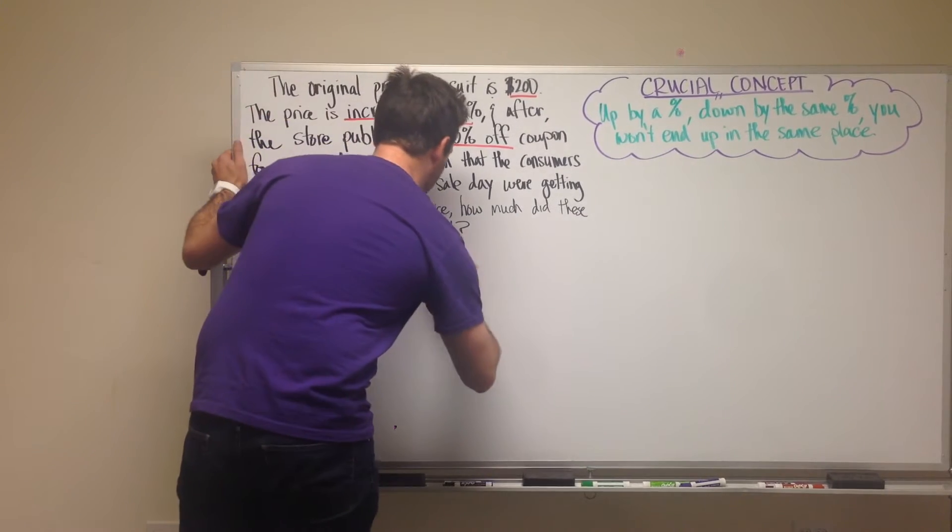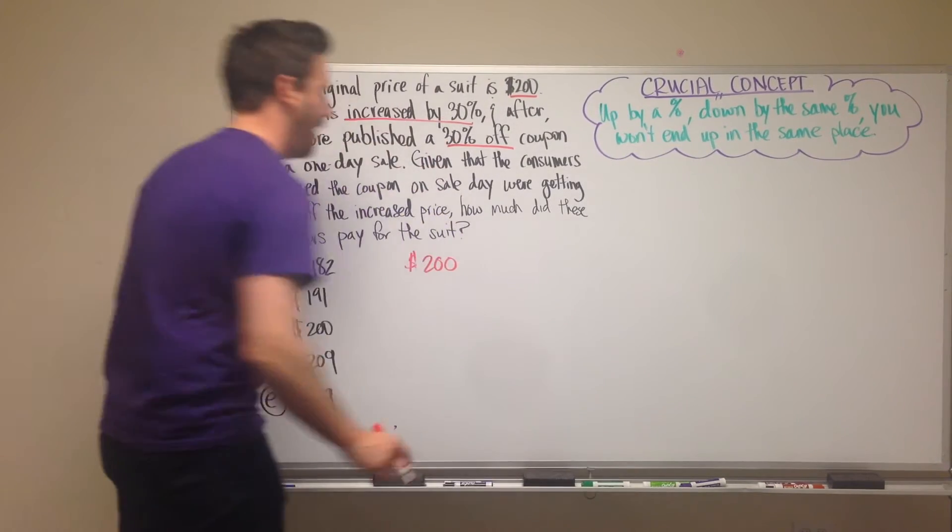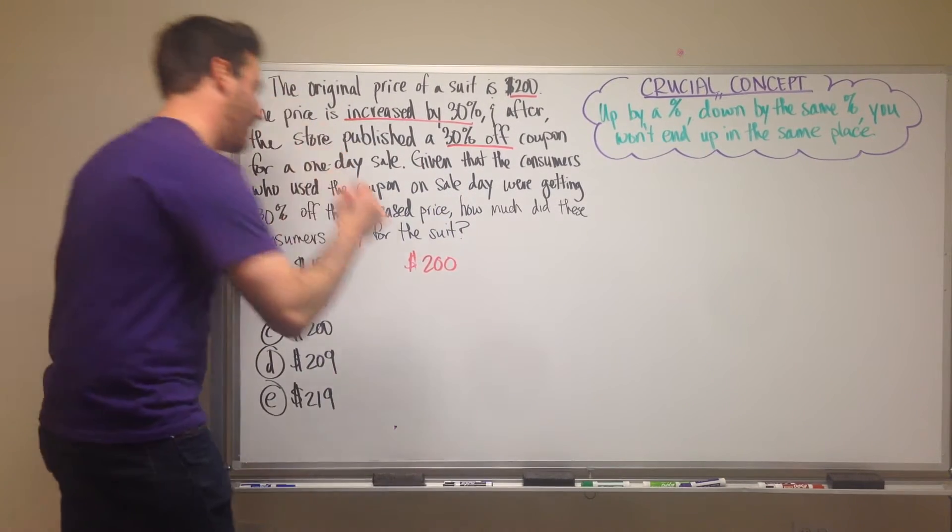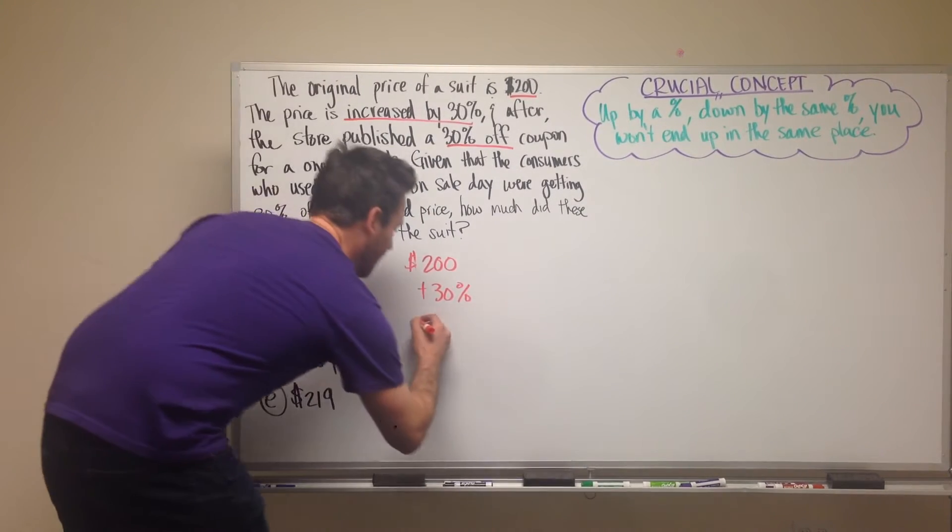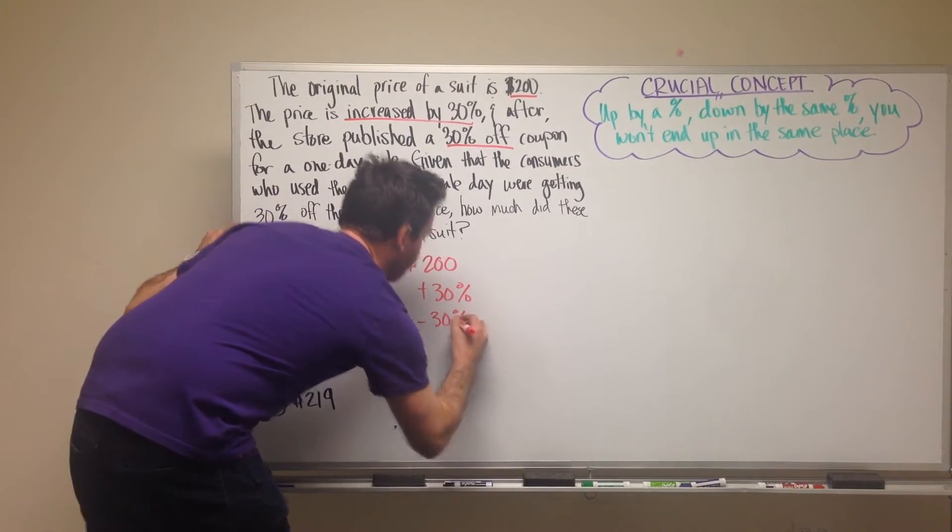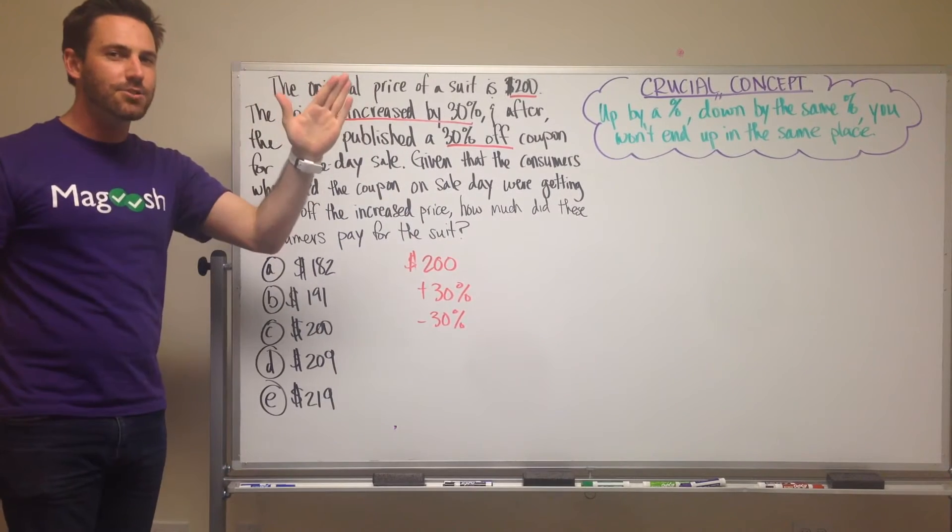So we're starting at $200 and it goes up by 30%, so we can say plus 30%, and then it goes down by 30%, so we can say minus 30%.